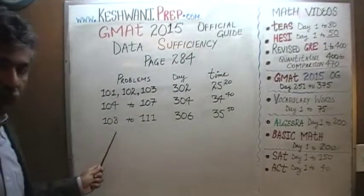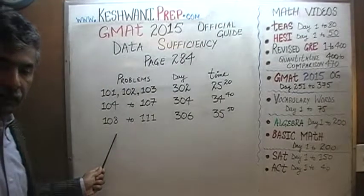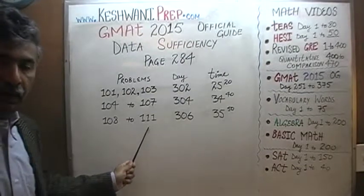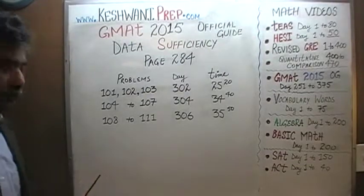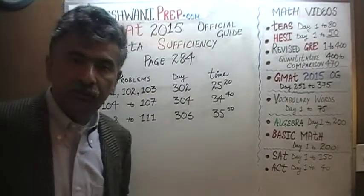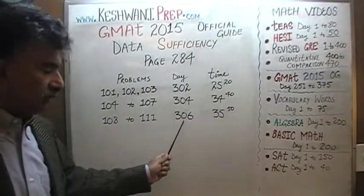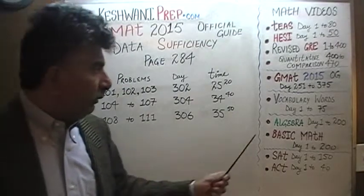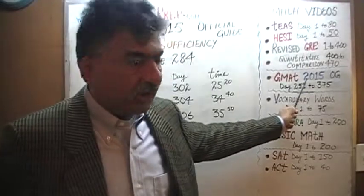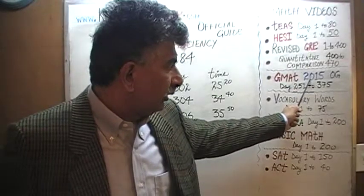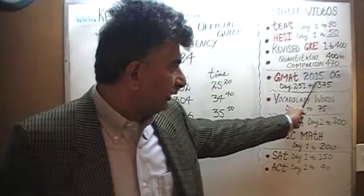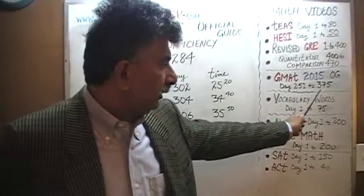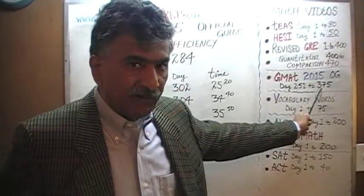And finally, you will find the solutions to problems 108, 109, 110, and 111 — those four problems, you will find the solutions on day number 306. You will be able to find the solutions to every single math problem appearing in the 2015 Official Guide from day number 251 through 375.